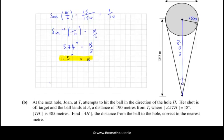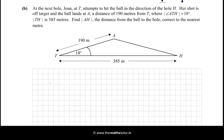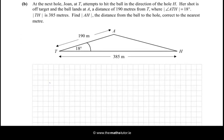Okay, moving on. At the next hole, Joan, at T, attempts to hit the ball in the direction of the hole H. Her shot is off target and the ball lands at A, a distance of 190 metres from T, where the angle ATH is 18 degrees. TH is 385 metres. Find AH. Okay, so this is what we're looking for, this distance here. AH. The distance from the ball to the hole correct to the nearest metre.